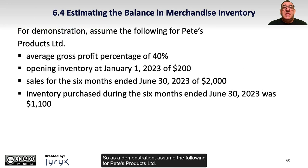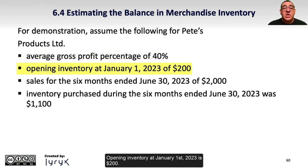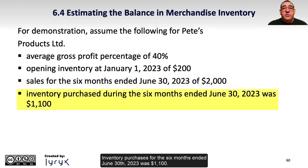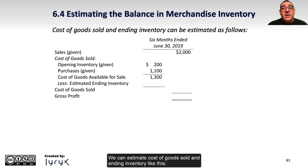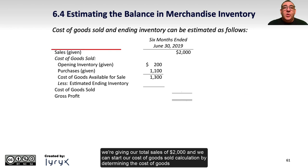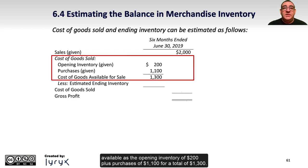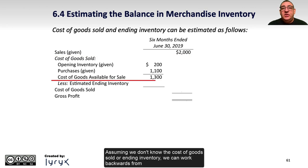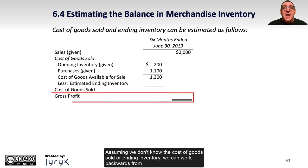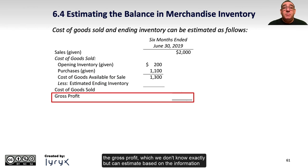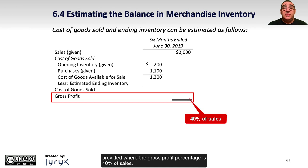As a demonstration, assume the following for Pete's Products Limited. The average gross profit percentage is 40%. Opening inventory at January 1st, 2023 is $200. Sales for the six months ended June 30th, 2023 are $2,000. Inventory purchases for the six months ended June 30th, 2023 were $1,100. We're given total sales of $2,000, and we start the cost of goods sold calculation by determining cost of goods available as opening inventory of $200 plus purchases of $1,100, for a total of $1,300. Assuming we don't know the cost of goods sold or ending inventory, we can work backwards from the gross profit, which we can estimate since the gross profit percentage is 40% of sales.